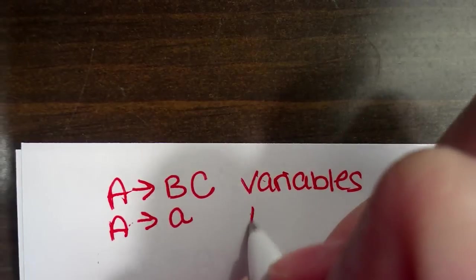All right, so what we're going to do today is a Chomsky normal form example. And just as a reminder to everyone, context-free grammar is in Chomsky normal form if it has the form of A points to BC or A points to lowercase a, where B and C are variables and A is a terminal.